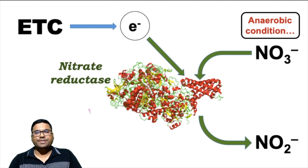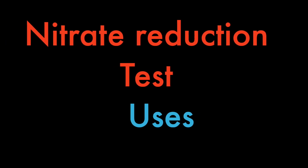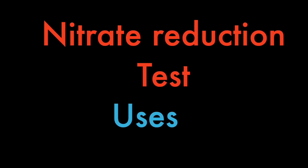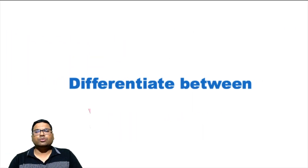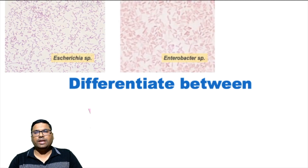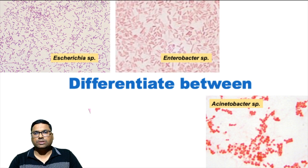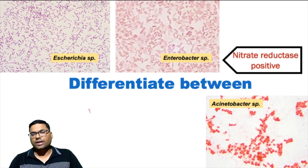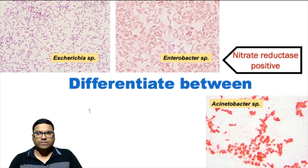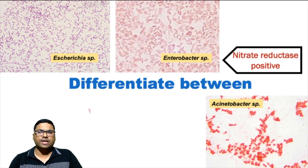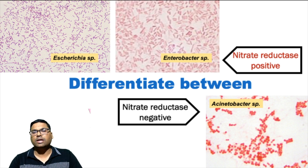Now we will see the use of this Nitrate Reduction Test. This test is used to differentiate bacteria like Escherichia and Enterobacter from Acinetobacter species. Escherichia and Enterobacter form Nitrate Reductase enzyme and are called Nitrate Reductase positive organisms, while Acinetobacter is unable to form this enzyme and is called a Nitrate Reductase negative organism.